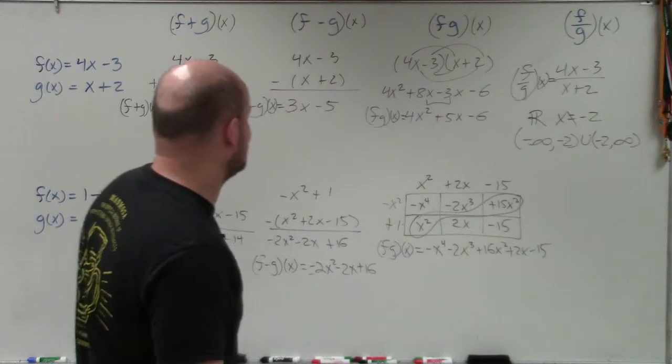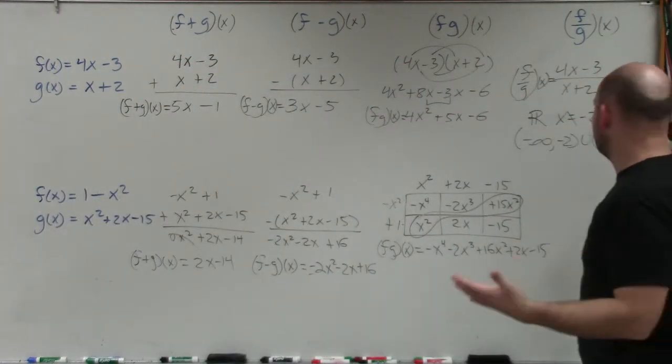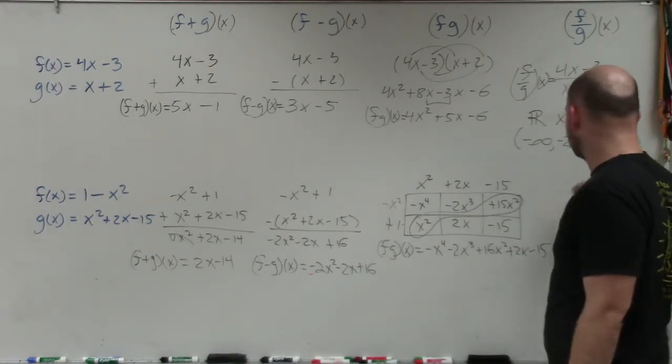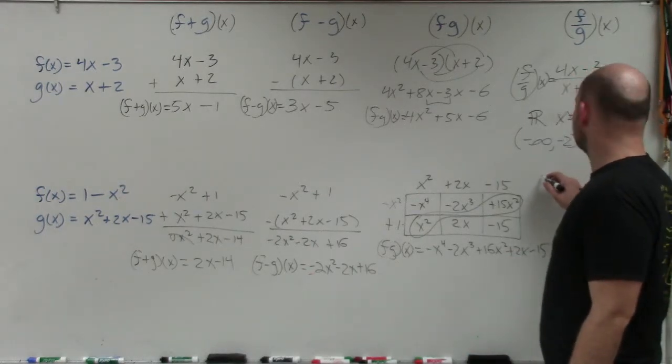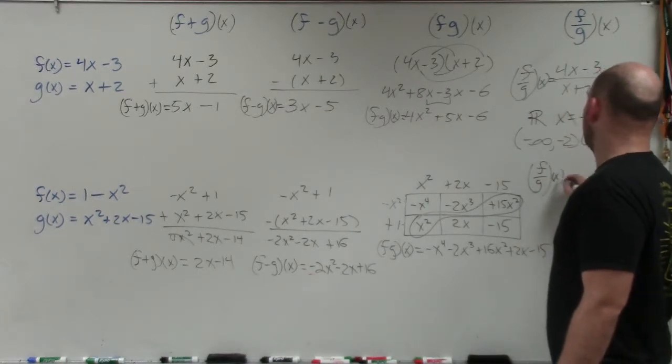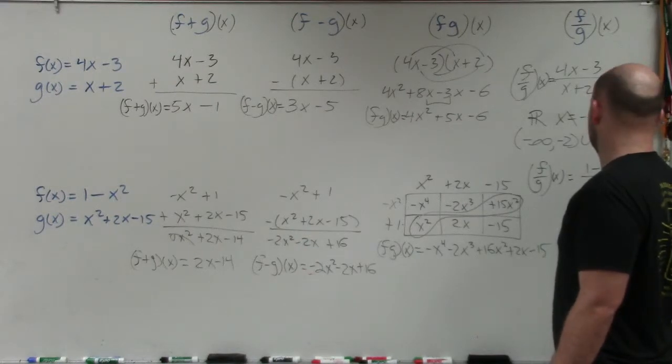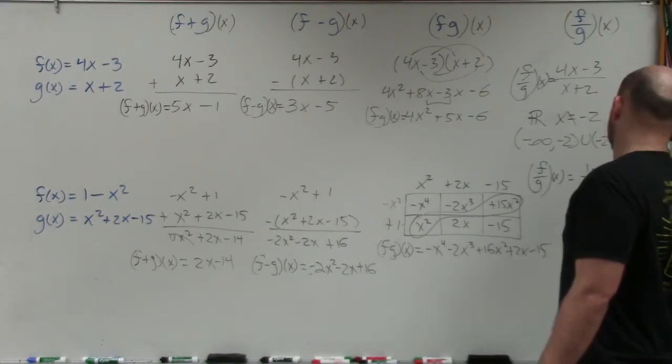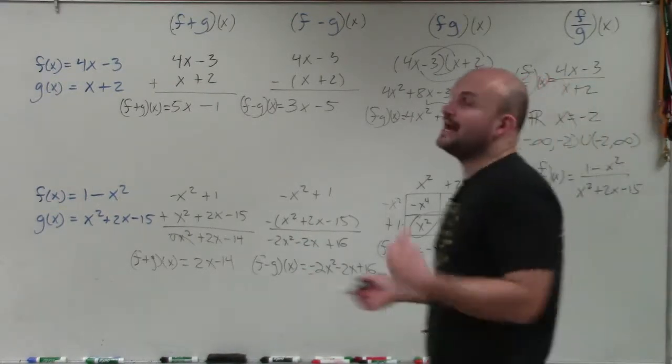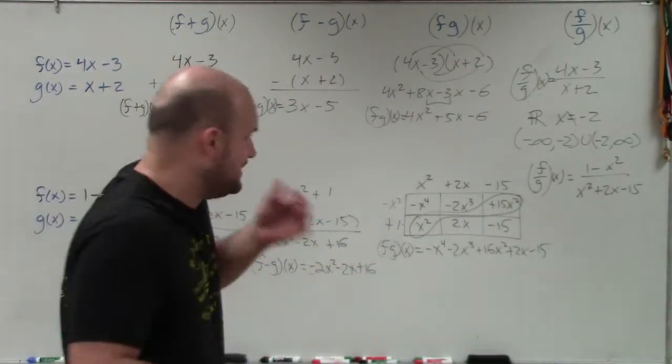All right, now let's get into the last one. And the last one is saying f divided by g of x. So basically, all we have for that is f divided by g of x. All I'm simply going to do is write one function over the other function. So that's 1 minus x squared over x squared plus 2x minus 15. But obviously, we want to see, again, we want to look at, well, what is the domain? What are the values that our function cannot be?